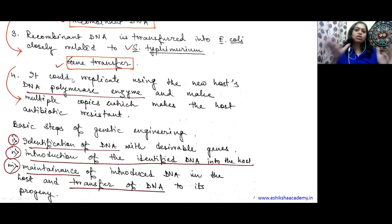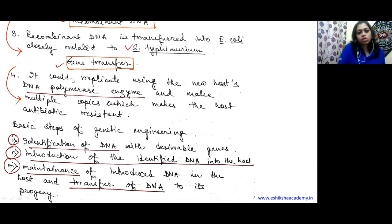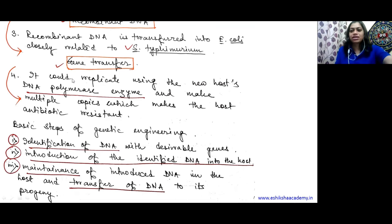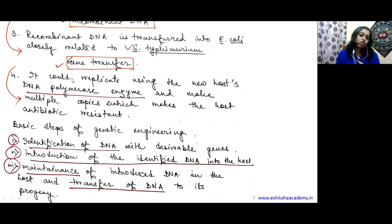So this is the whole concept of genetic engineering. First, we make recombinant DNA - we cut the gene of interest using restriction endonuclease, then ligate it with the vector using DNA ligase. Then we make multiple copies of this recombinant DNA, which is called gene cloning. Finally, the recombinant DNA is transferred into a new host closely related to the vector host. The new host provides DNA polymerase for replication. The gene of interest is replicated, transcription and translation occur, the product is formed, and the E. coli becomes antibiotic resistant.